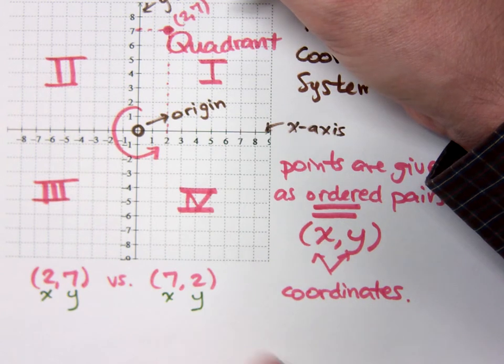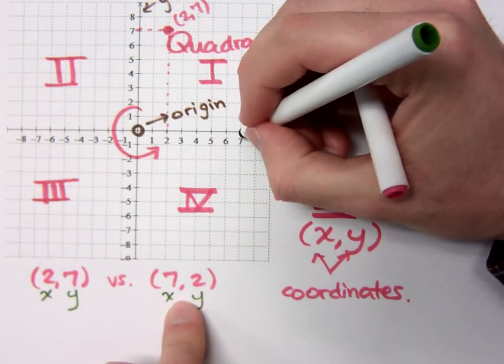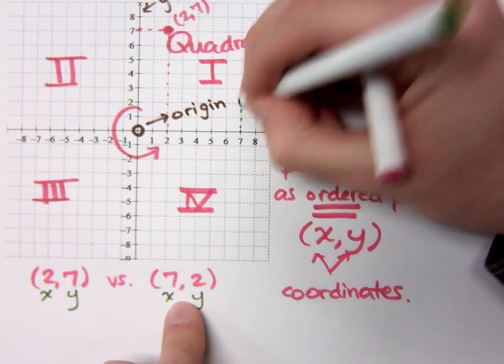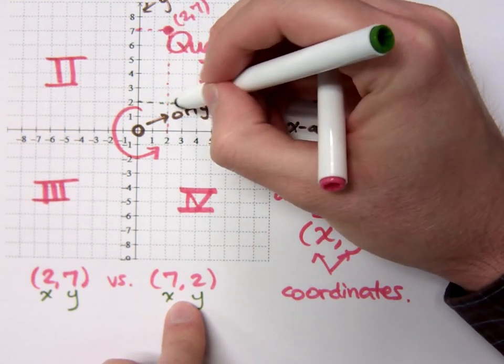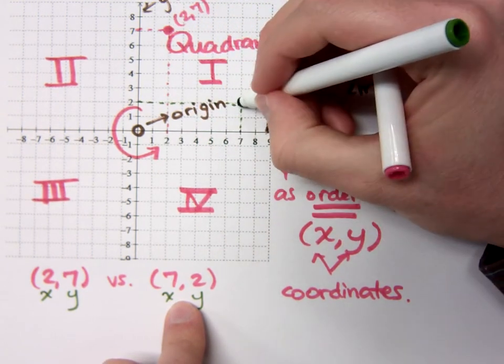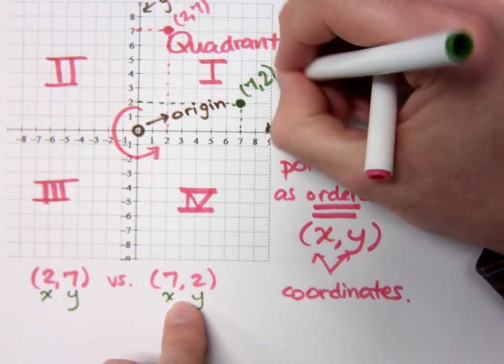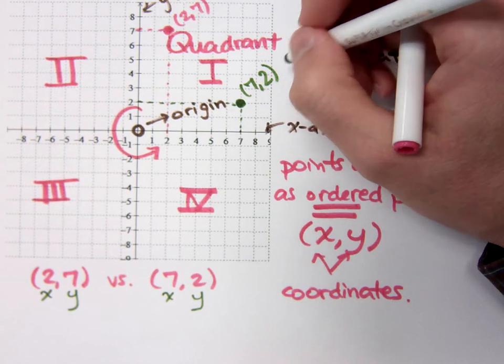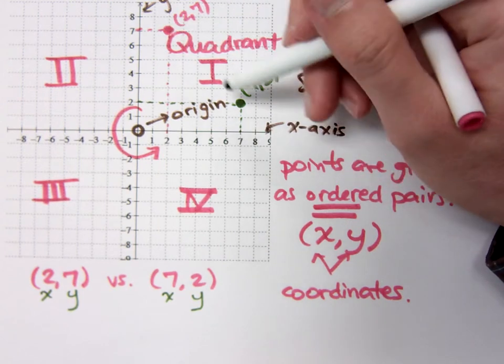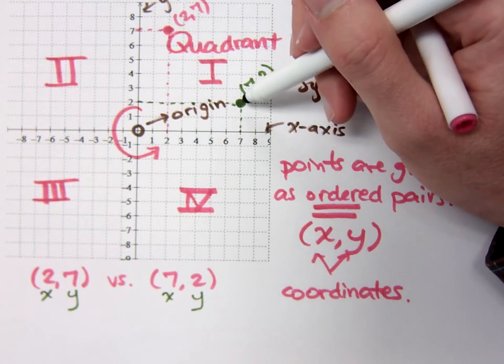If I'm talking about the ordered pair 7, 2, well, that means when X is 7, and where that meets up with the Y value of 2 right here. So this point is for the ordered pair 7, 2. Are these the same point? No.